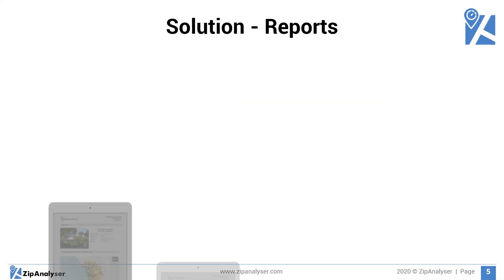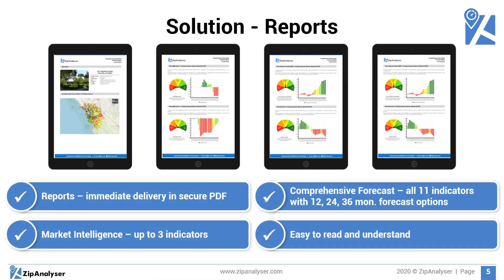Zip Analyzer offers two versions of reports: Market Intelligence and Comprehensive Forecast. The Market Intelligence report leverages only 3 of 11 factors, while the Comprehensive includes all 11 factors and a very accurate 36-month local real estate forecast.